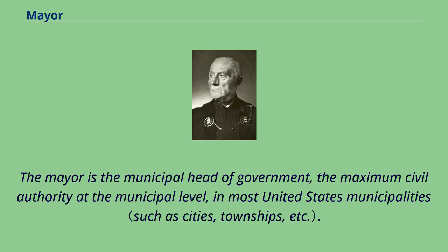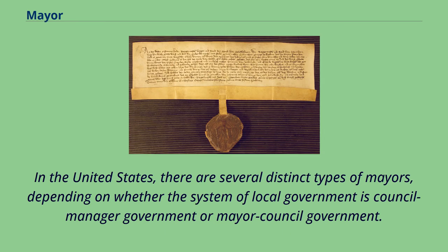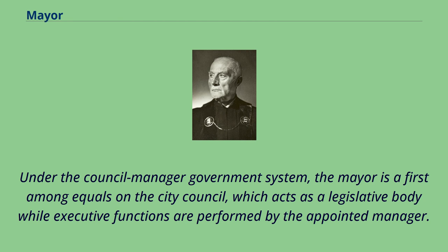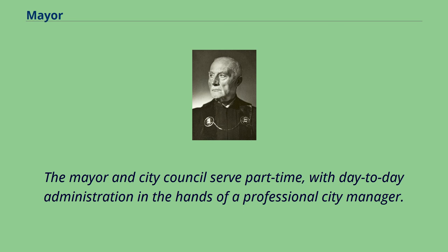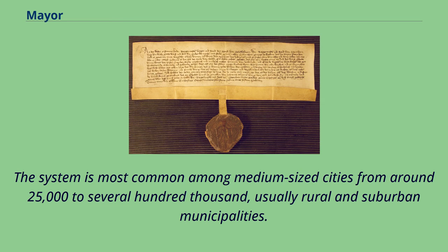The mayor is the municipal head of government, the maximum civil authority at the municipal level, in most United States municipalities. In the United States, there are several distinct types of mayors depending on whether the system of local government is council-manager government or mayor-council government. Under the council-manager government system, the mayor is a first among equals on the city council, which acts as a legislative body while executive functions are performed by the appointed manager. The mayor may chair the city council but lacks any special legislative powers, and the mayor and city council serve part-time with day-to-day administration in the hands of a professional city manager. The system is most common among medium-sized cities of around 25,000 to several hundred thousand, usually rural and suburban municipalities.